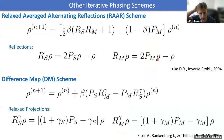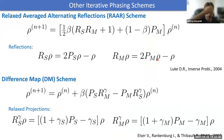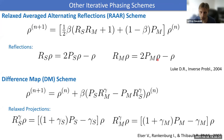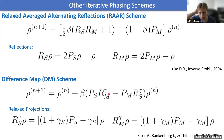Other iterative phasing methods exist beyond ER and HIO. The Relaxed Averaged Alternating Reflections (RAAR) scheme has properties between ER and HIO in terms of stability and ability to escape local minima. The Difference Map (DM) scheme has behavior similar to HIO with additional tunable parameters.